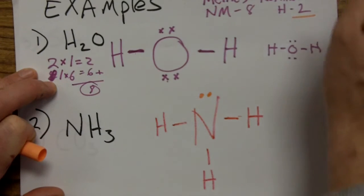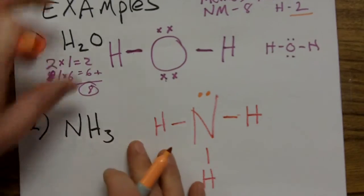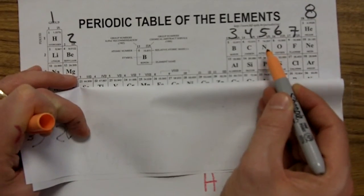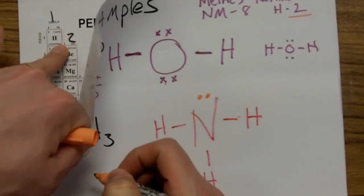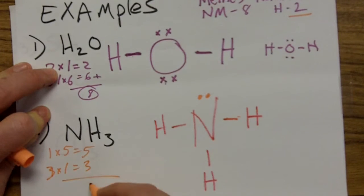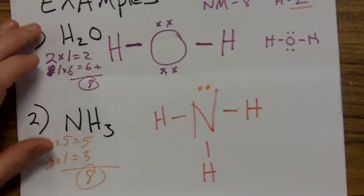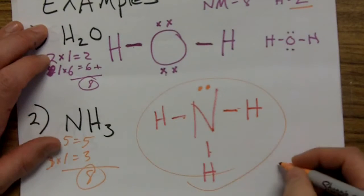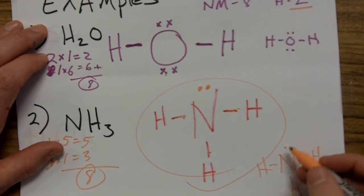Now let's count up the totals and see if we've used the right number. Nitrogen has five valence electrons and there's one atom: one times five is five. Hydrogen has one valence electron and there are three atoms: three times one is three. Five plus three is eight — we were supposed to use eight. Counting the structure: two, four, six, eight. We're good! That is the Lewis structure of ammonia — three bonds to hydrogen and a lone pair above the nitrogen.